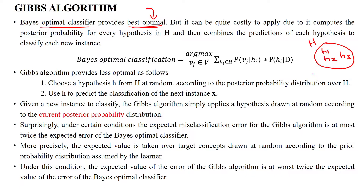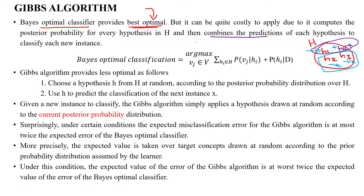If H1 is for the positive class, H2 is for the negative class, and H3 is for the negative class, we will combine the two hypotheses for the negative class. For the positive class, we will use H1. If H4 is also available and is for the positive class, we will use H4 as well and combine both hypotheses.